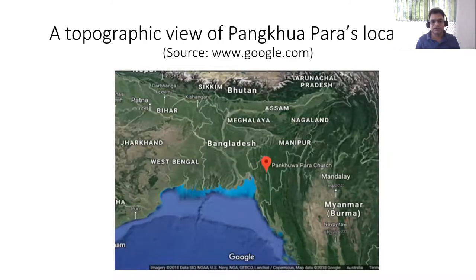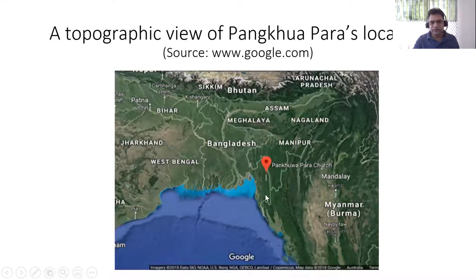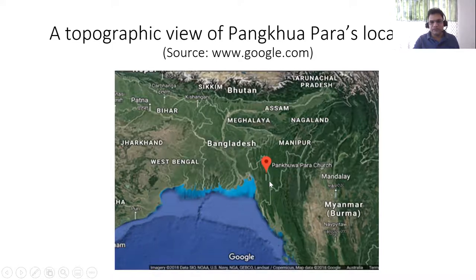This is the location of Pankwa speakers. As you can see, this is Chittagong division, here are the Chittagong Hill Tracts, and Pankwa speakers are located somewhere in the middle. This is the Bay of Bengal, this is the border of India — northeast India — and this is Mizoram somewhere here. There are other Tibeto-Burman languages spoken around here.